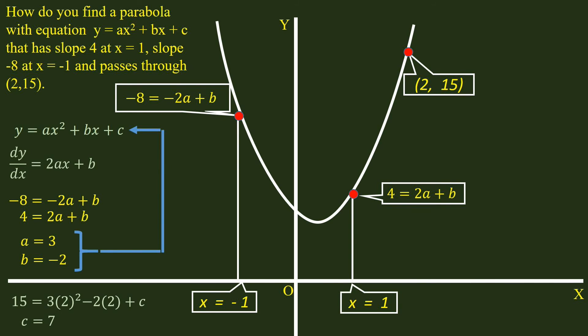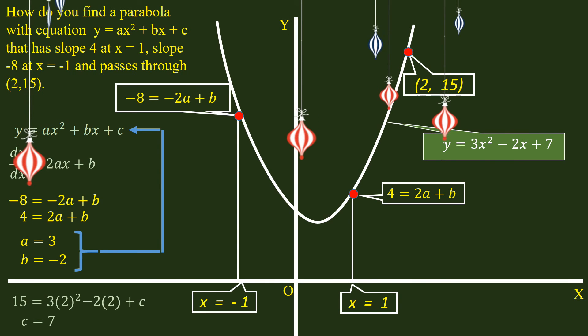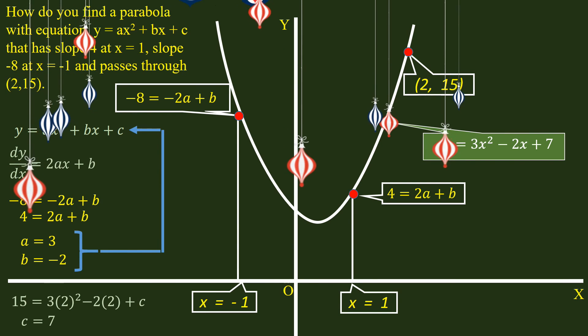Plug in the values in y = ax² + bx + c. We get the equation y = 3x² - 2x + 7.